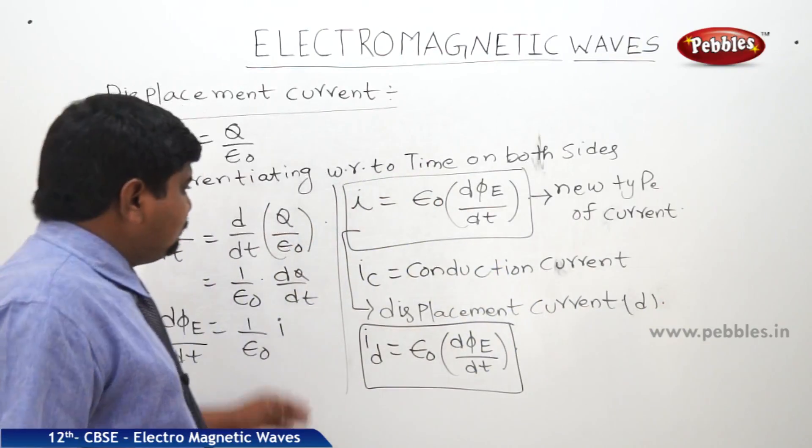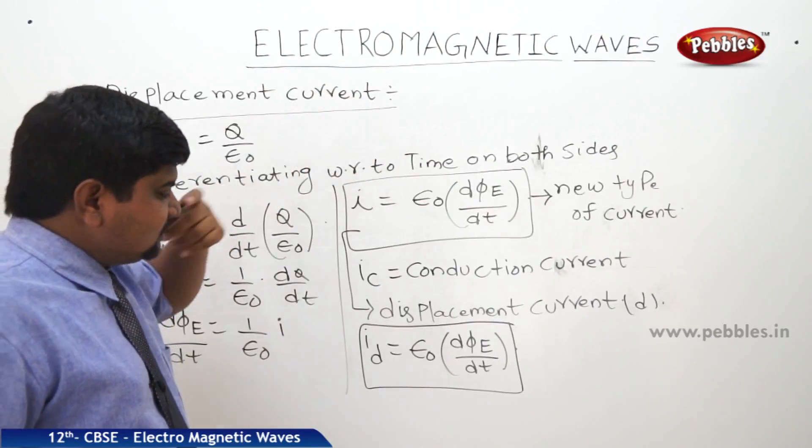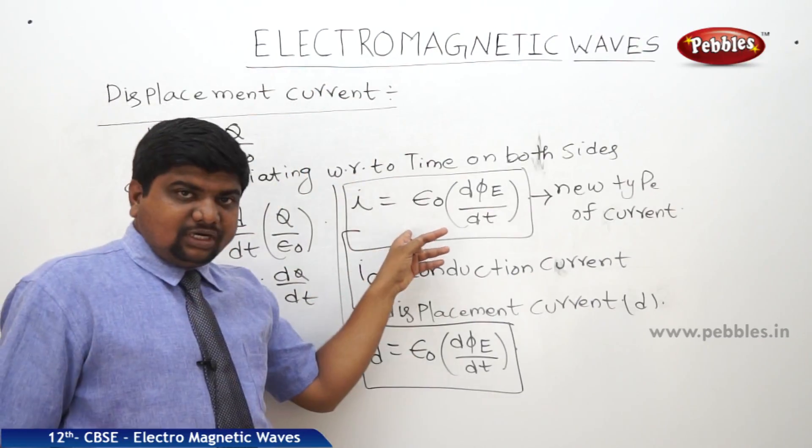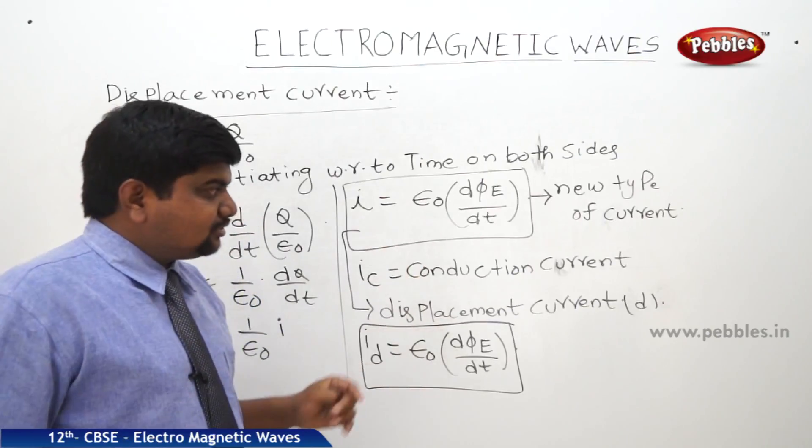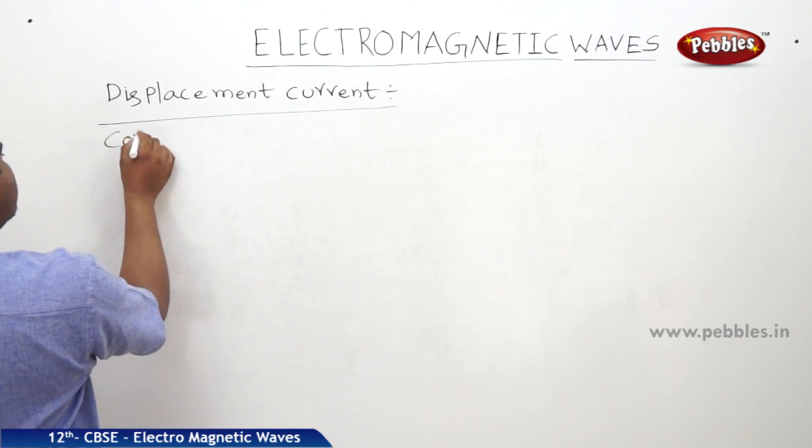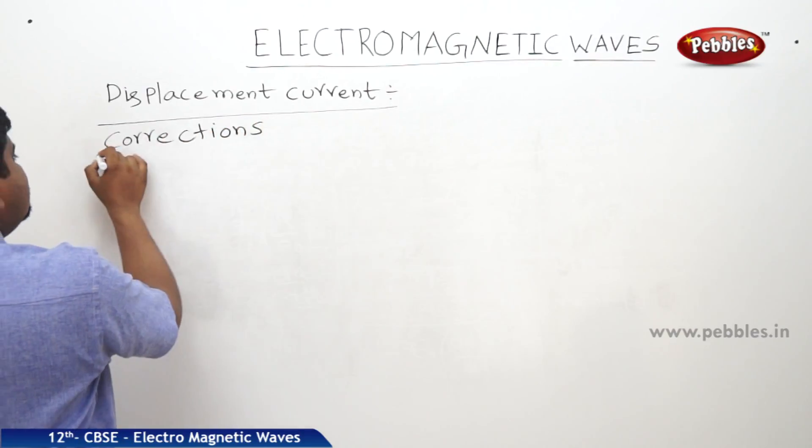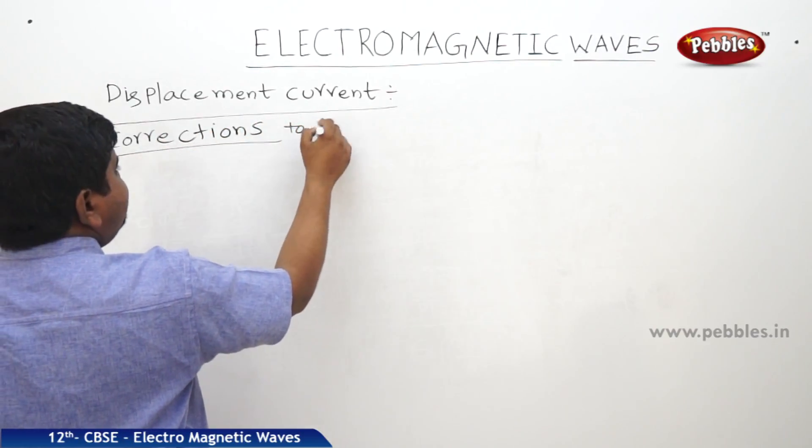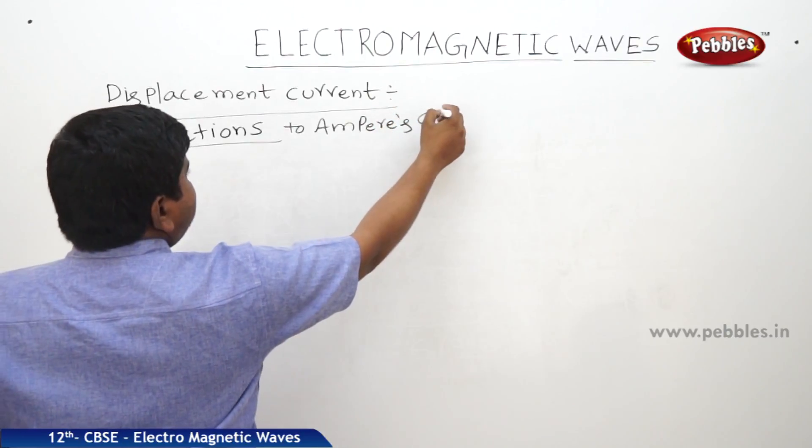So, the Ampere's correction, Ampere's law, B is equal to mu naught I by 2 pi R. And it was corrected with the help of mu naught IC plus mu naught ID. So, the expressions will change like this. So, the corrections are like this. Corrections to Ampere's circuit law.